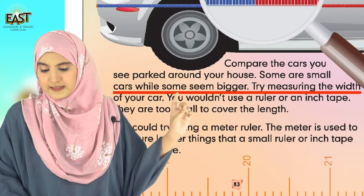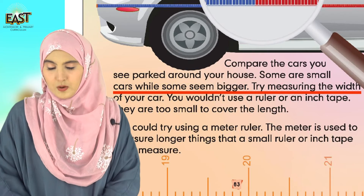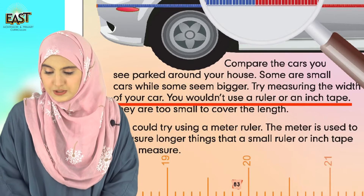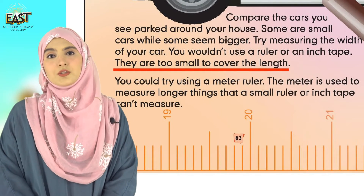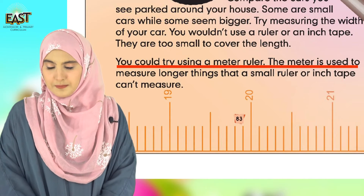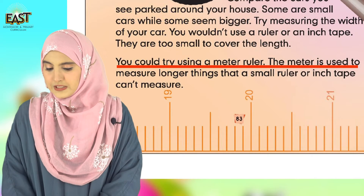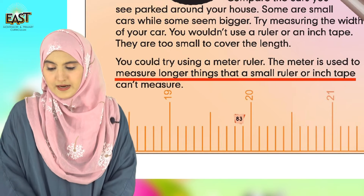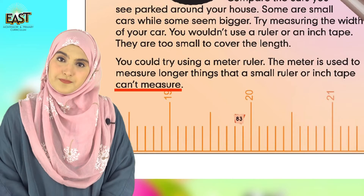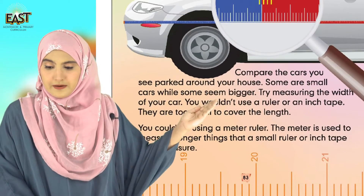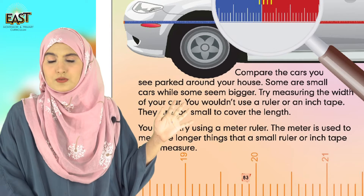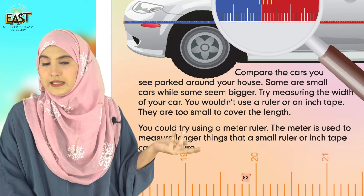Compare the cars you see parked around your houses — some are small cars while some seem bigger. Try measuring the width of your car. You wouldn't use a ruler or an inch tape because they are too small to cover the length. You could try using a meter ruler. The meter is used to measure longer things that a small ruler or inch tape cannot measure.